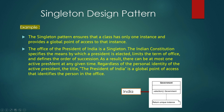The constitution defines the order of succession — at most only one active president at any given point in time. Regardless of the personal identity of the active president, the title 'President of India' is the global point of access that identifies the person in office. So in India, at any time only one president exists and the president's office is the unique point of access.